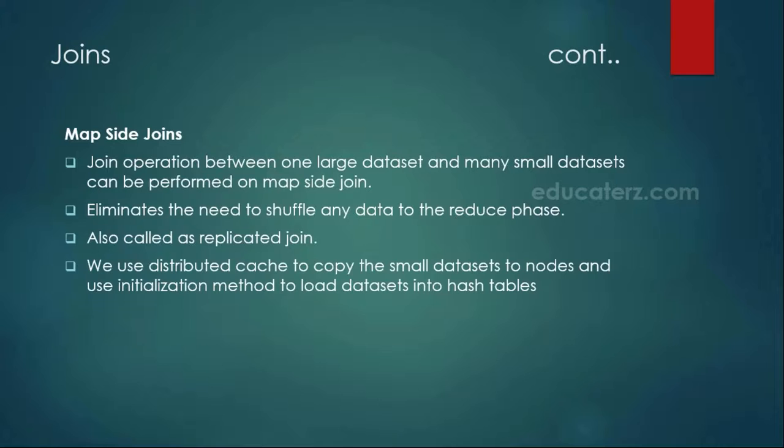That is how the map-side join is going to work with the help of distributed caching. We also call this map-side join a replicated join because we are replicating that data set into all other data nodes. In the map-side join, since we are doing everything on the map side itself, there is no need to perform the shuffle, sorting of data, and moving it to the reducer phase, because everything is going to be processed in the mapper itself.